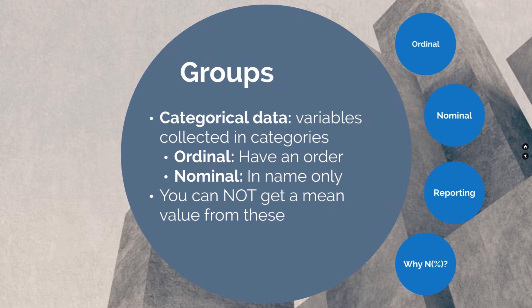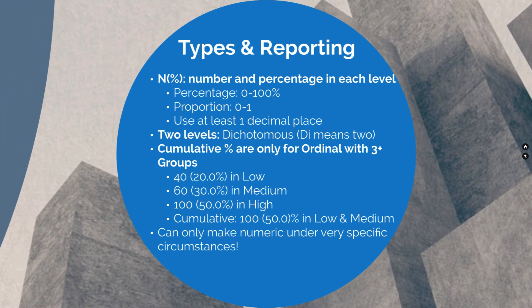When you report categorical variables, remember to report both the n and the percent. The percent tells you what percentage of the overall is within each category, and the n tells you how much evidence you have. Remember, 20% can come from 2 out of 10, 20 out of 100, or 200 out of 1,000. Percentages go from 0 to 100, proportions go from 0 to 1, and use at least one decimal place depending on how specific you need to be.